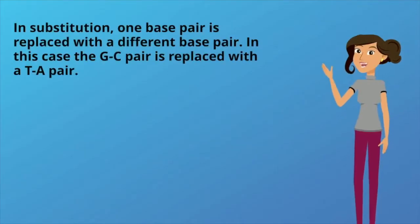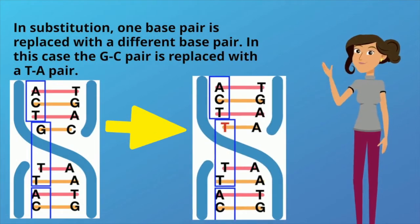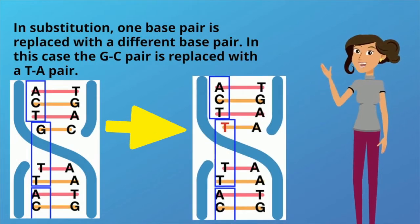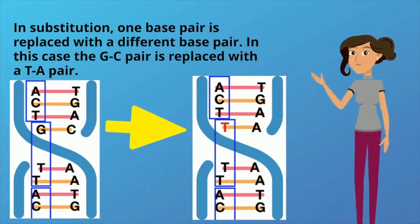In substitution, one base pair is replaced with a different base pair. In this case, the G-C pair is replaced with a T-A pair.